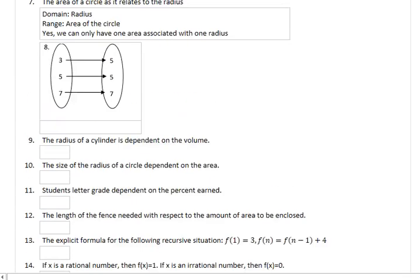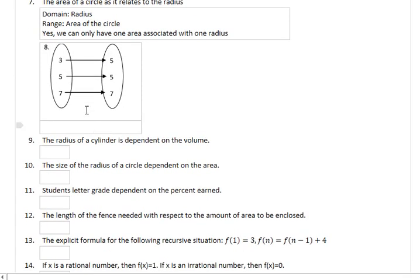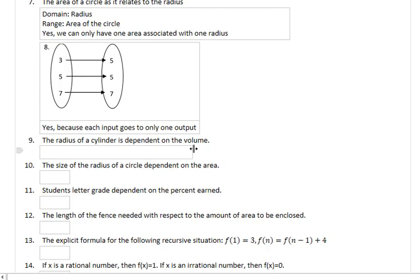We're going through these pretty quickly. This is not really meant to be that difficult. Today we have a map, where we have inputs over here and outputs over here. We're looking for more than one arrow coming off a single input. And no, it looks like we're good. So this is a function, because each input goes to only one output.